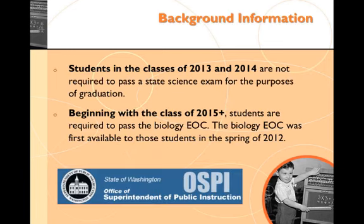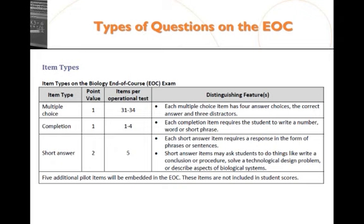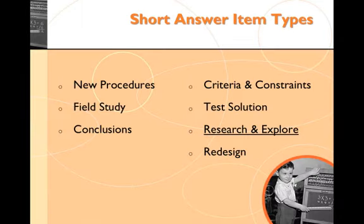As a quick note, beginning with the class of 2015 and later, students will be required to pass the Biology EOC as part of graduation requirements. There are three types of questions on the EOC: multiple choice, completion, and short answer. It'll be the short answer category that we focus on in this podcast series. Of the seven short answer item types, we'll be looking at the Research and Explore prompt.